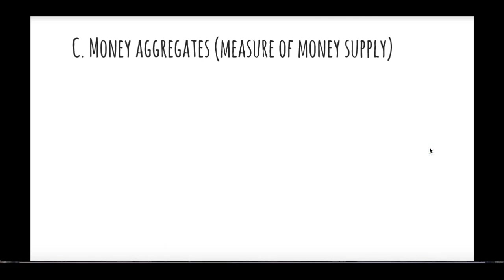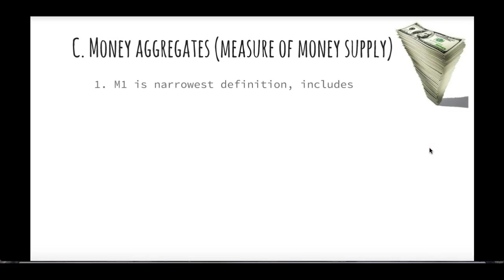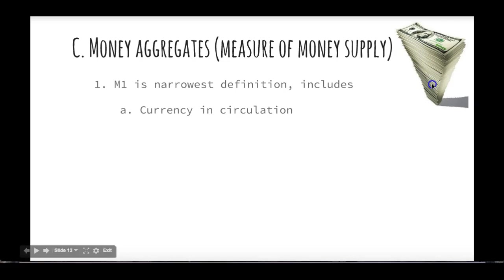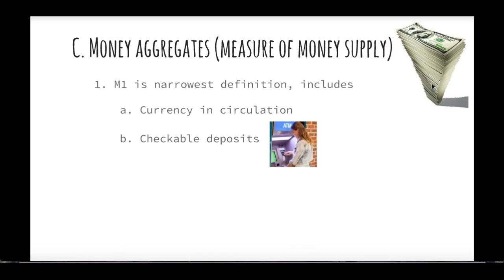The last topic is money aggregates — measures of the money supply. How do we know how much money is actually out there? Money is measured in two categories: M1 and M2. M1 is the narrowest definition of money — literally the currency in circulation. So counting out how much cash there is: cash and coins, but also including checkable deposits. Checkable deposits are accounts you could go to the ATM and get cash out of, or write a check for. M1 includes basically just the currency — actual cash in hand and checkable deposits.